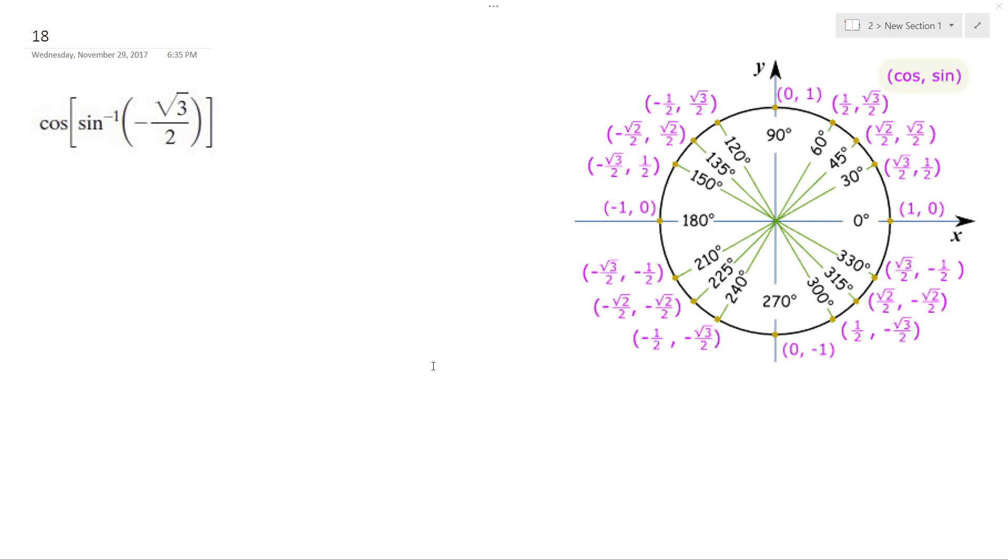All right, so we want to find the cosine of the inverse sine of negative root 3 over 2. Sine is bound between negative pi over 2 and pi over 2.